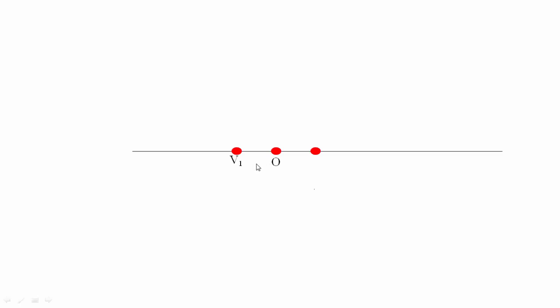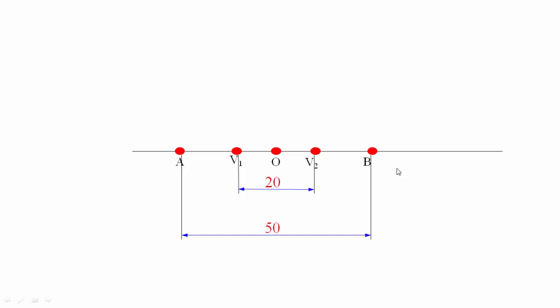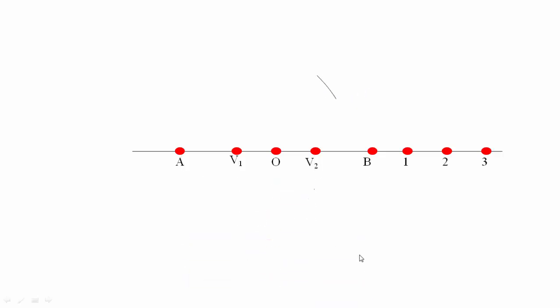I've drawn a center line and we're making two points V1 and V2 separated by 20 millimeters. Then we place the foci A and B separated by 50 millimeters. To make the concave-shaped hyperbola, I'm placing points labeled 1, 2, and 3 along the center line. Keep one leg of your compass at V1 and the other at point 1; with A as center, put an arc on the other side, and with B as center put arcs on both sides as well — giving us four arcs.